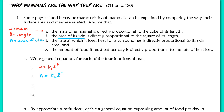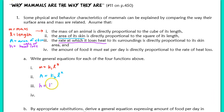In line 3, the rate at which the animal loses heat to its surroundings is directly proportional to its skin area. We introduce another new variable: let H equal the rate of heat loss. Since heat loss is directly proportional to skin area, the equation is H equals K sub 3 times A.